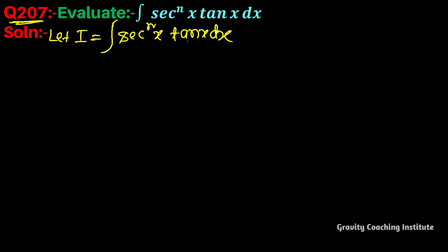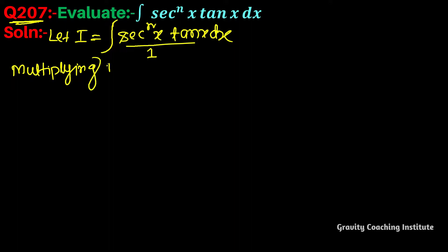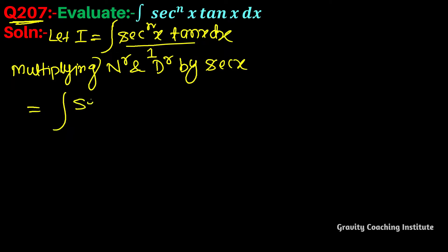If we differentiate sec(x) we get sec(x)tan(x). We multiply the numerator and denominator by sec(x), so we get sec^n(x) into sec(x)tan(x) upon sec(x).